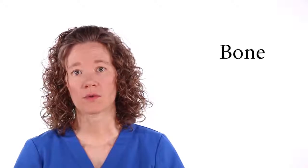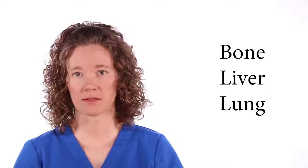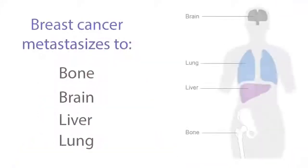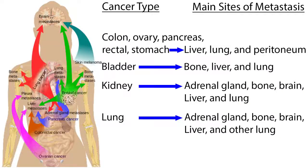Cancer can spread to any part of the body, but different types of cancer are more likely to spread to certain areas than others. The most common sites where cancer spreads include bone, liver, and lung. Breast cancer metastasizes to bone, brain, liver, and lung. Colon, ovary, pancreas, rectal, and stomach cancers metastasize to liver, lung, and peritoneum. Bladder cancer goes to bone, liver, and lung.